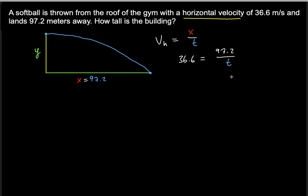And notice that when you want to solve for t, all you just do, you just switch these two around. So t will be essentially equal to 97.2 over 36.6. And what that gives us is 2.655737704 seconds.